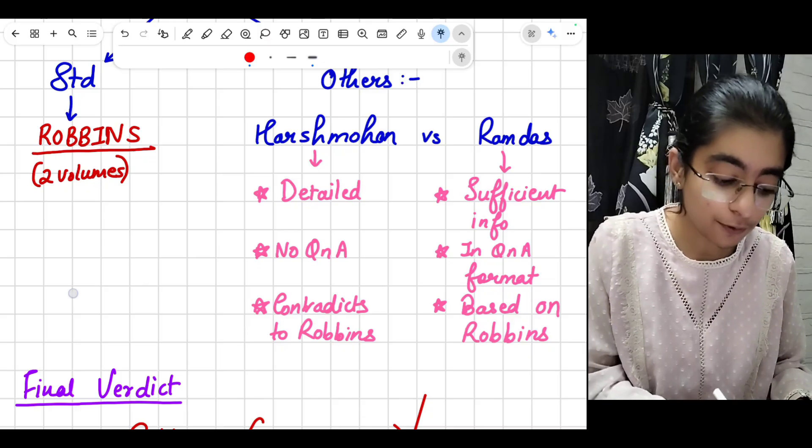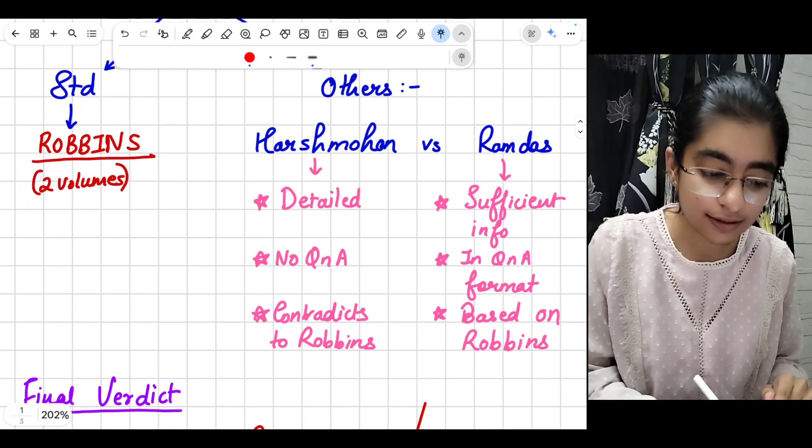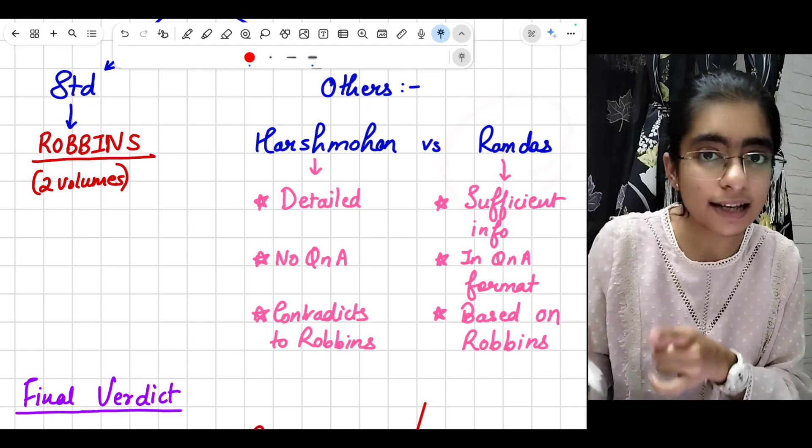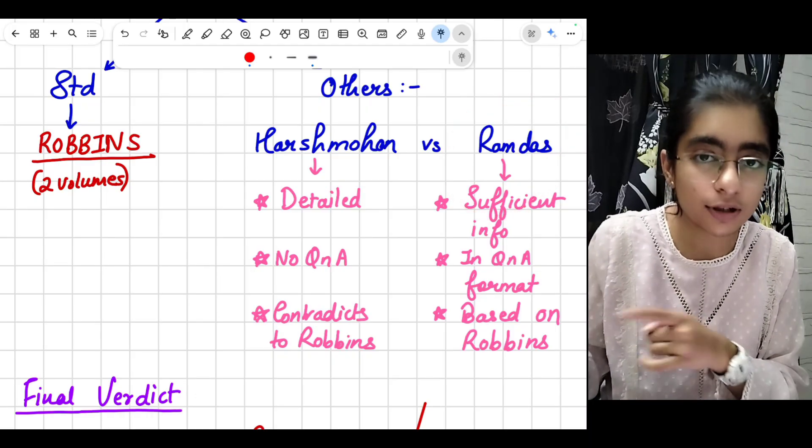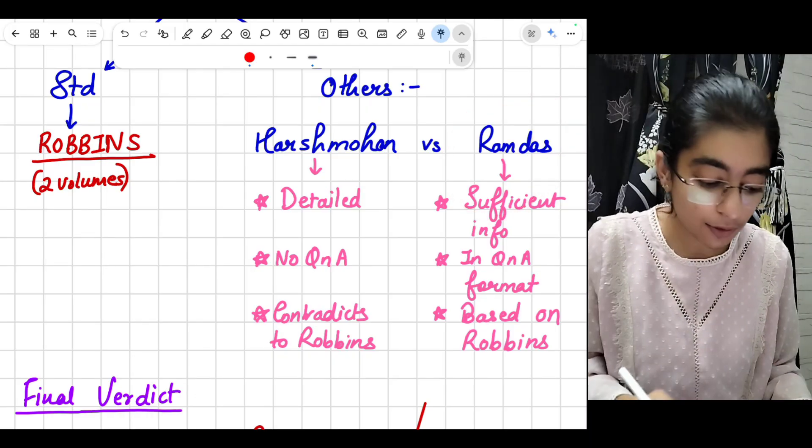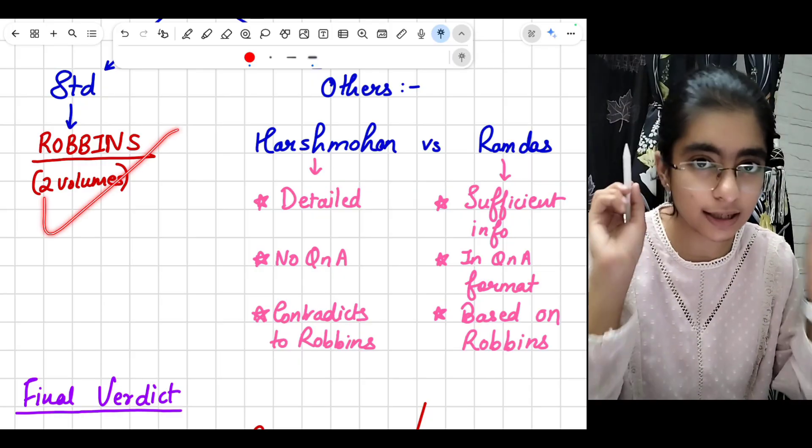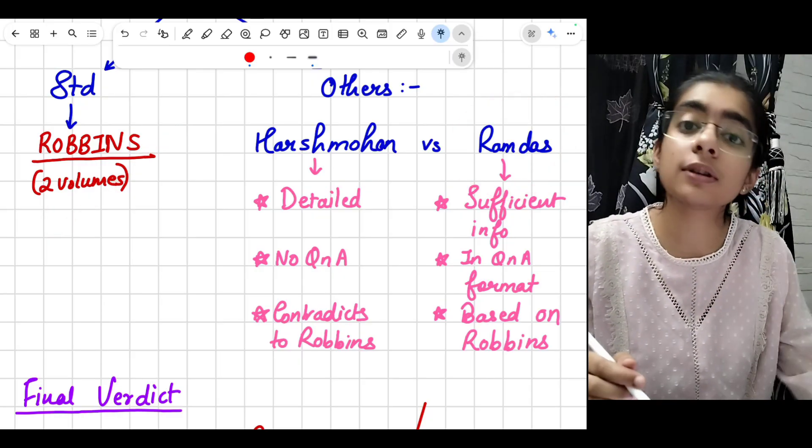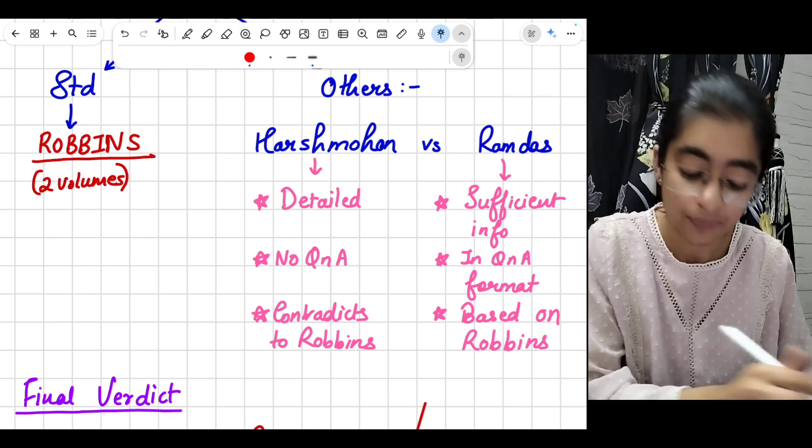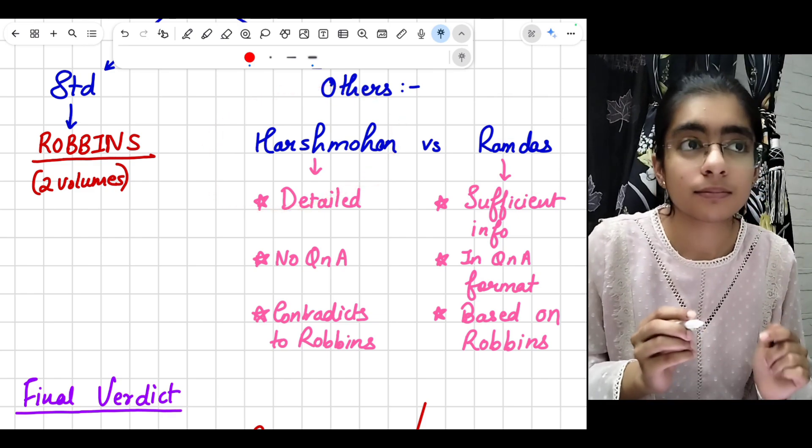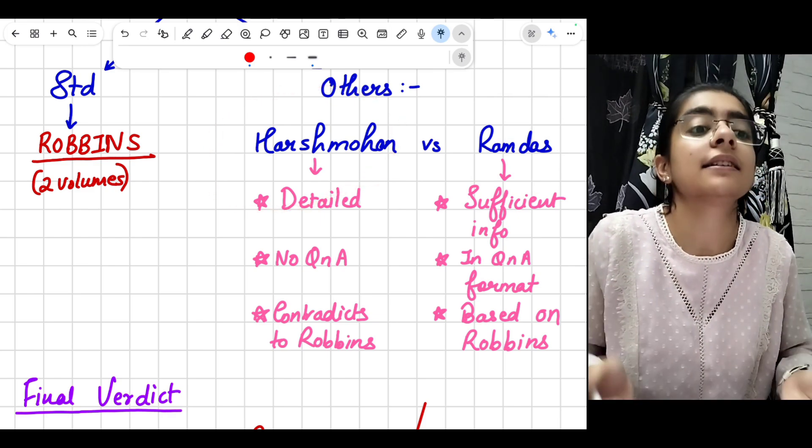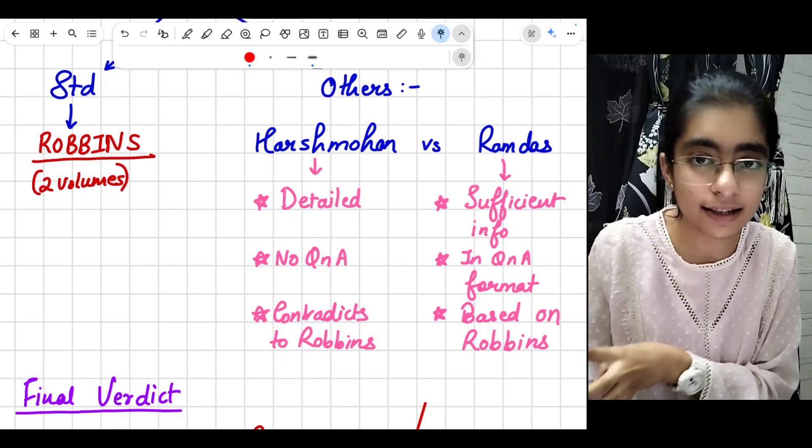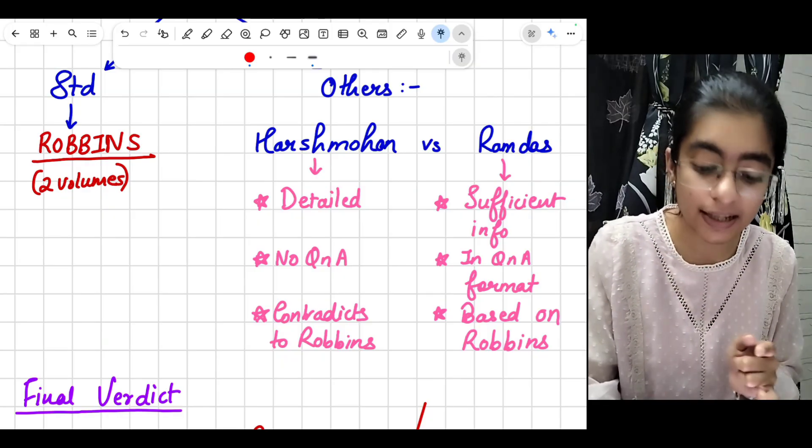If you are following Robbins, it is a wise decision to follow Ramdas Naik as an Indian alternative along with Robbins, because from Robbins you are gaining the concept and information, but from Ramdas you will know how to write that concept in the exam. But from Harshmohan I don't think we can get that better way of writing in the exam as we get in Ramdas.